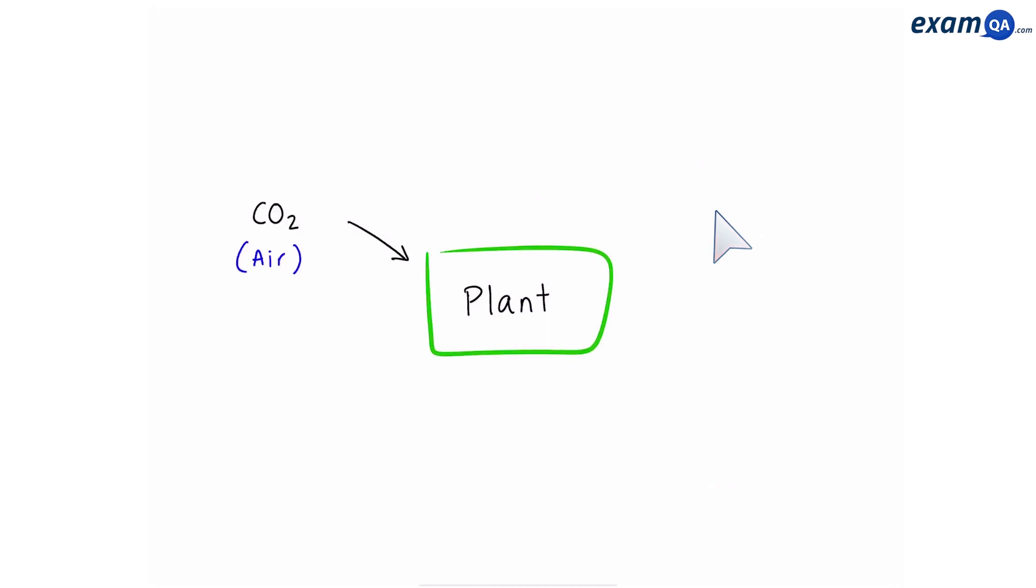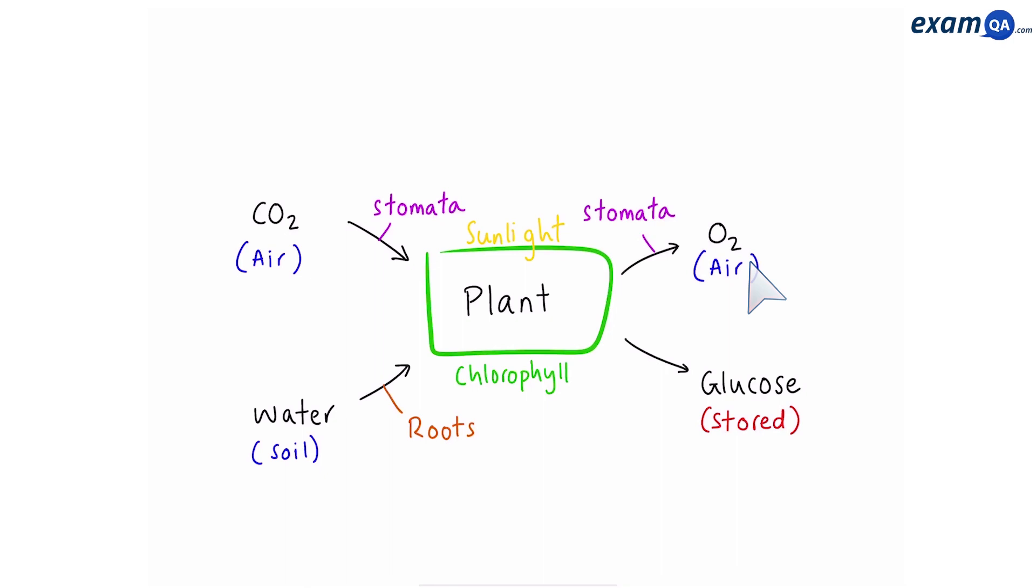So to summarize, a plant takes in carbon dioxide from the air through its stomata, and absorbs water from the soil using its roots. Then, with the help of sunlight and chlorophyll, turns this into glucose, which is stored in the plant as a very important carbohydrate, and also releases oxygen in the air through its stomata.